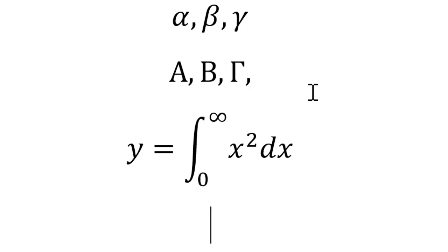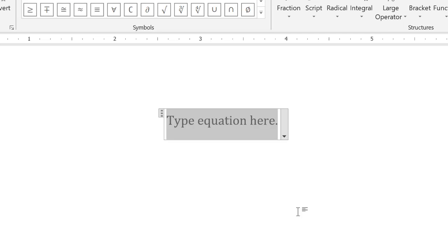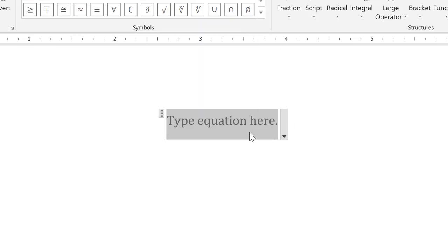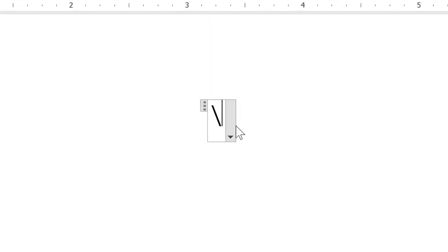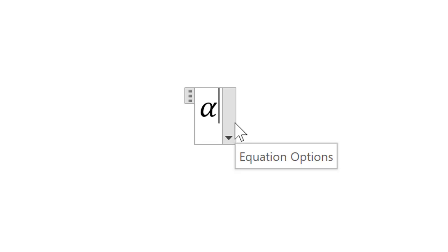First of all, let us insert an equation by pressing Alt and Equal at the same time. This will insert an equation. For example, I want to write Greek letters alpha, beta, and gamma. So instead of finding those symbols from the equation editor, I will simply type backslash alpha and press space. You see, it is converted into alpha. Similarly, I write beta and press space.